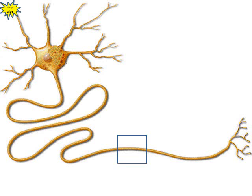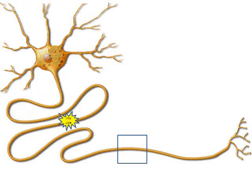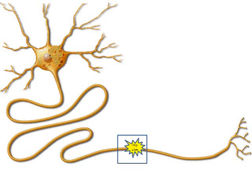Here's a neuron, and in the upper left-hand corner you can see the impulse is traveling down the neuron, down the axon. Let's go ahead and pause that impulse right there and zoom in to take a closer look.